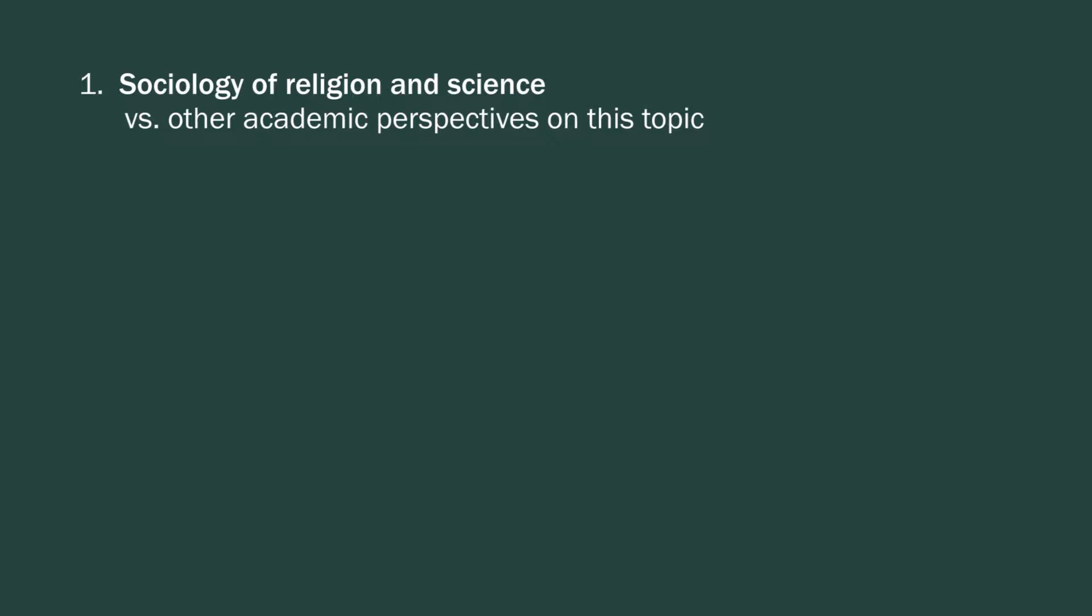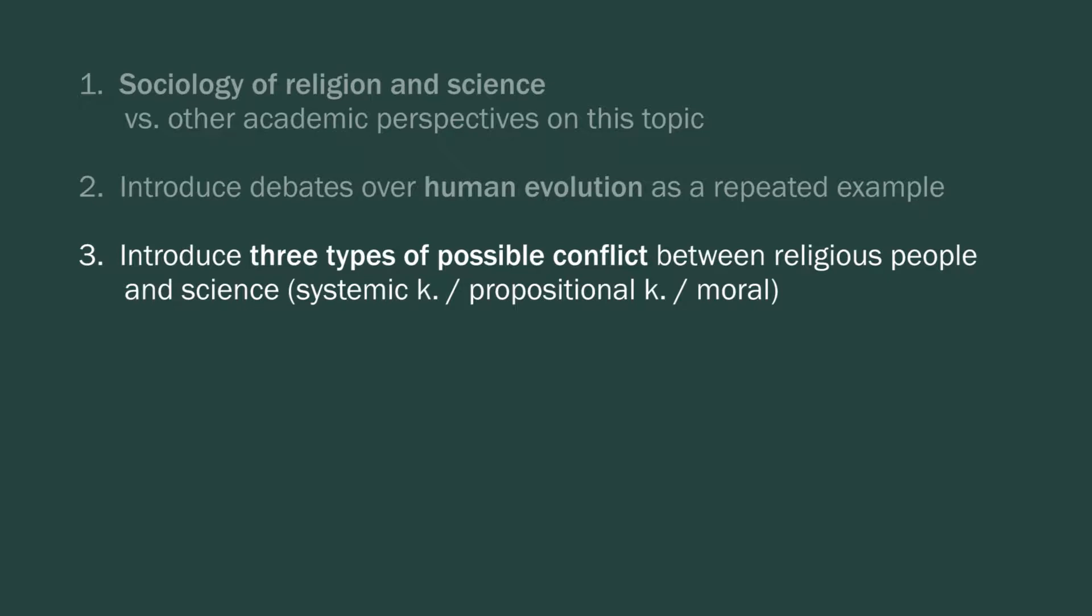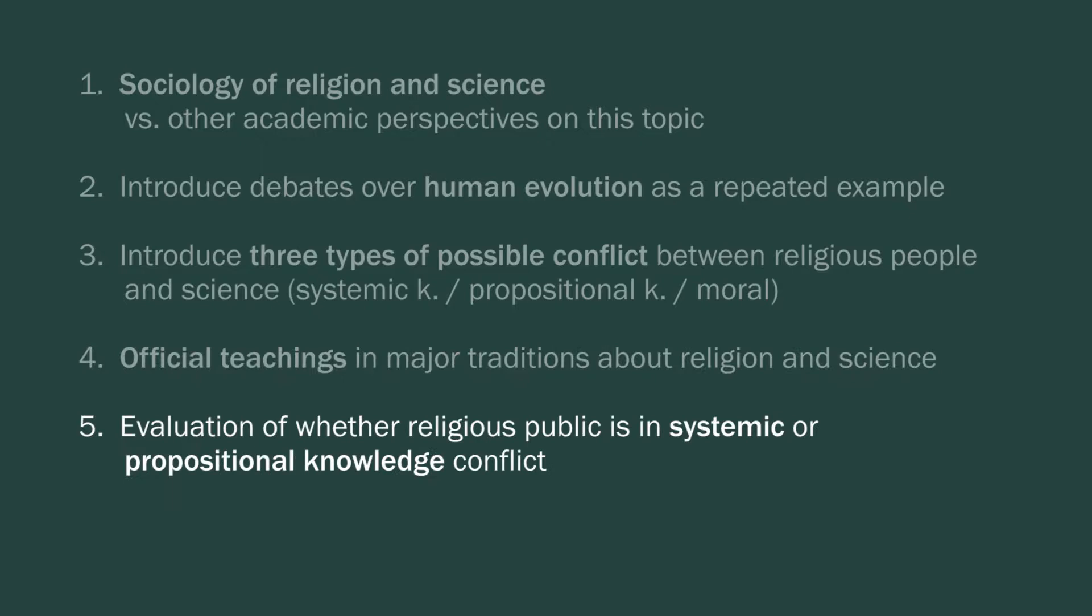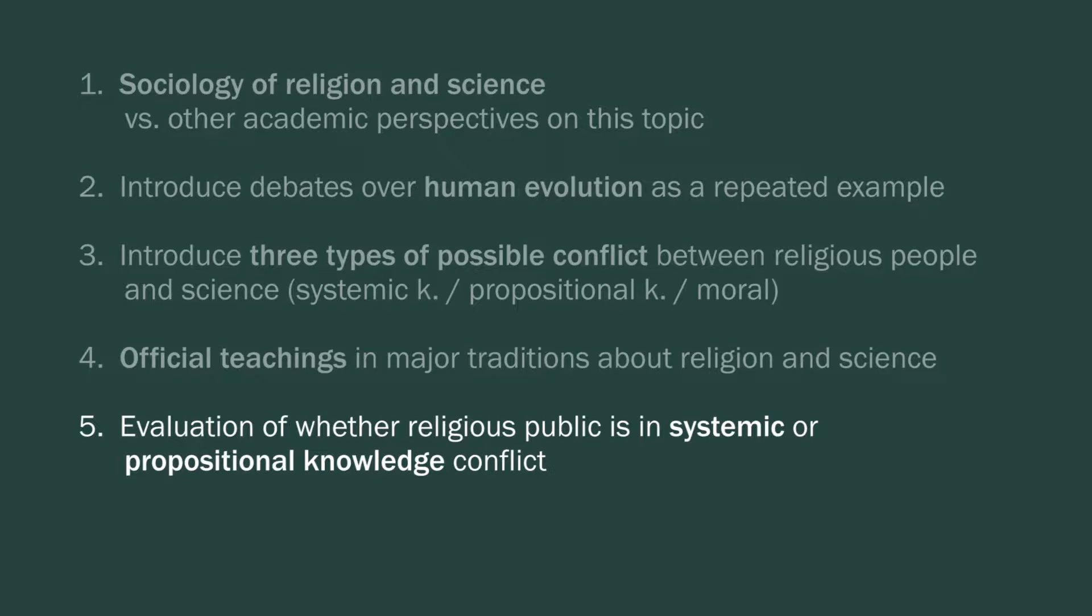I want to introduce debates over human evolution as an ongoing example that I'll be using throughout this course. And then I want to talk about three possible ways that religious people and science could be in conflict: what I will call systemic knowledge conflict, secondly propositional knowledge conflict, and finally moral conflict. I want to talk about the official teachings in the major traditions about religion and science in the West, and then evaluation of whether or not empirically it is correct that religious public is in conflict with science, and whether or not it's possible that religious public is in moral conflict with science.